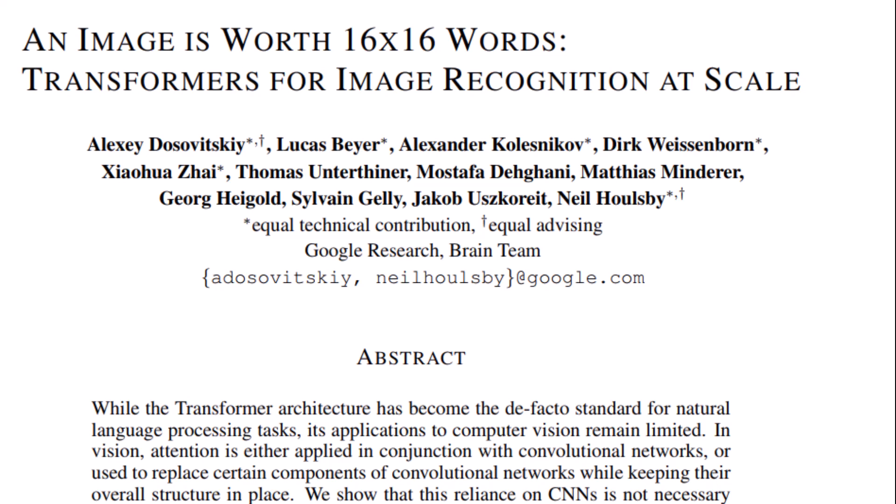Transformers have long been used in natural language processing. However, because of the high computational requirements, they couldn't be employed in computer vision. In this work, the Google research brain team developed a pretty creative approach to utilize them in computer vision, which is extremely important to know because they now dominate many applications in computer vision and achieve higher accuracies than CNNs. So, let's just see how it's working.